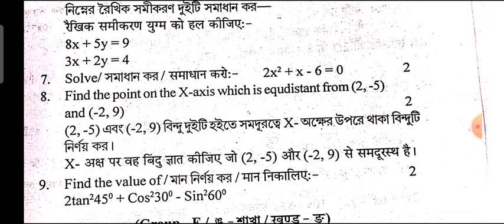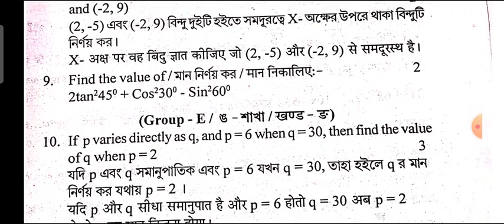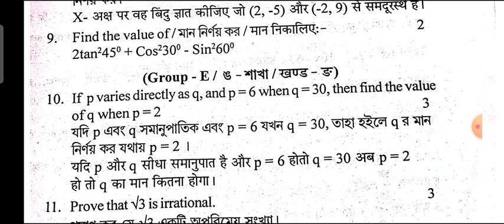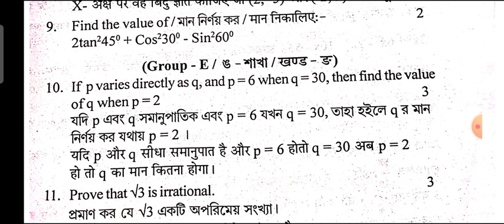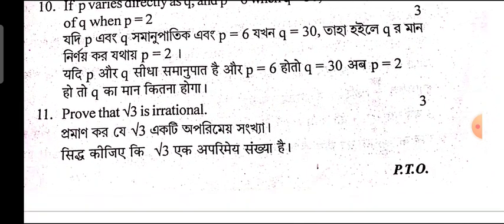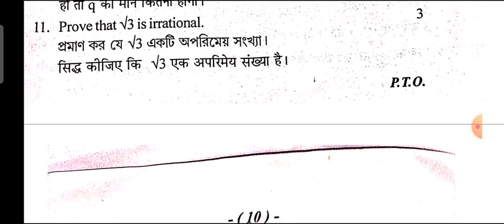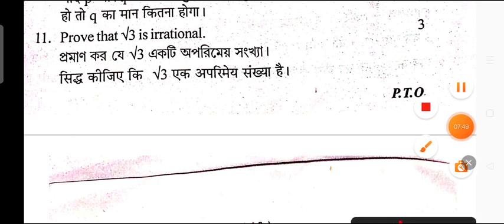Linear equation, pair of linear equations — yeah, that's very important. Okay, number 9, chapter 8 to 10. Square 45 degree course — it's got 30 degree minus sign, square 60 degree — now find out the value. Okay, next one: prove that root 3 is irrational number — very, very important.